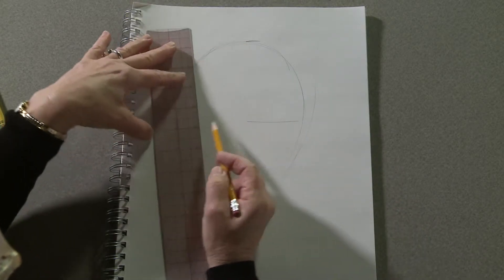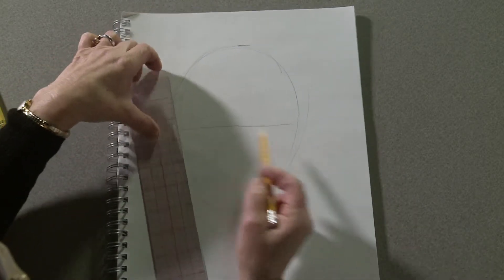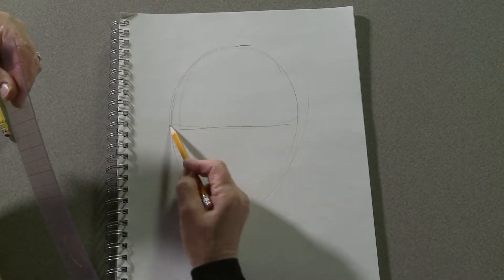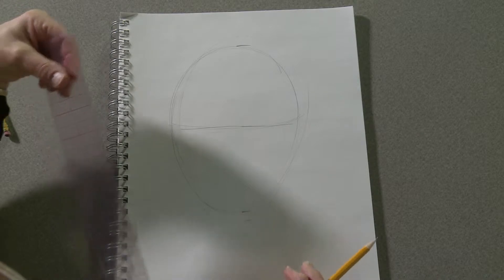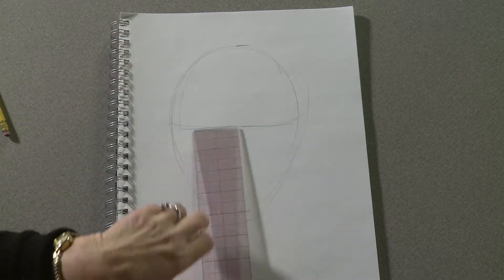So halfway down the face, draw a line. It can be a curved line because we are trying to think of this in three dimensions. Draw a line for the eyes.